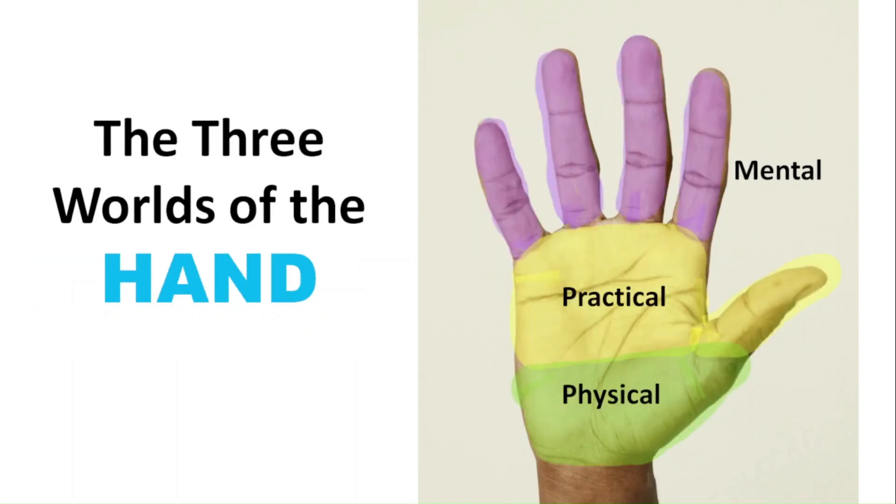Applying the same idea to the hand as a whole, if your fingers are the most developed, then you live in the mental world. If the middle section of your hand is most developed, then you're in the practical world. And if the base of your hand is most developed, you prefer the physical world. So which section of your fingers and hands are the most developed? And are they both pointing to the same world? Or do you have the influence of two worlds in your hands?